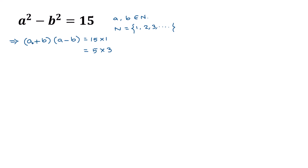Since a and b are both natural numbers, a + b is greater than a − b. Comparing both factor pairs, we get our first combination: a + b = 15 and a − b = 1.